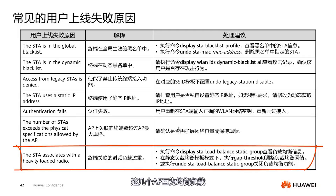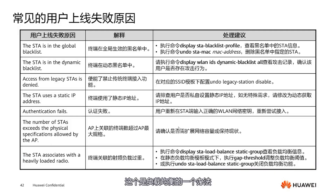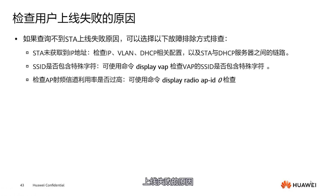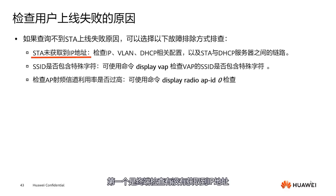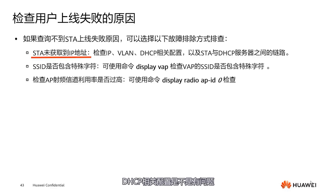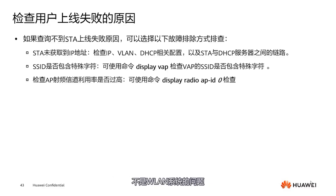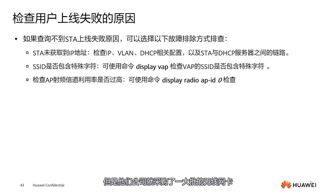The reasons for upper limit failures have mostly been covered. The first is to check whether the terminal has obtained an IP address, and whether there are any issues with its VLAN and DHCP-related configurations. Additionally, older terminals might have inherent issues not related to the WLAN system, which could also cause them to fail to come online. I've seen a case where a network administrator's company purchased a large batch of wireless network cards for desktops — the quality of those wireless cards wasn't very good. When they connected, we tested with laptops.